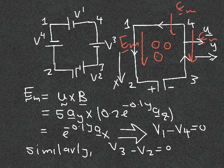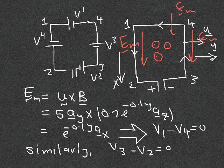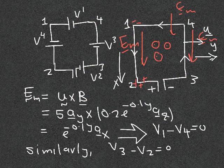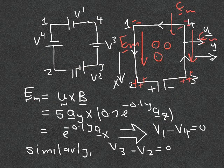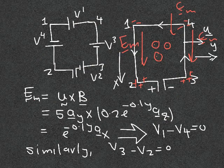For wires 1-2 and 4-3, which are both in the x-direction, E_m is in the same direction as the wire. Since E_m points this way, negative charges accumulate on one side, making V2 higher than V1, so V2 minus V1 is positive. For the other wire, charges move toward point 3 and negative charges accumulate near point 4, so V3 is higher in potential than V4, meaning V3 minus V4 is positive.